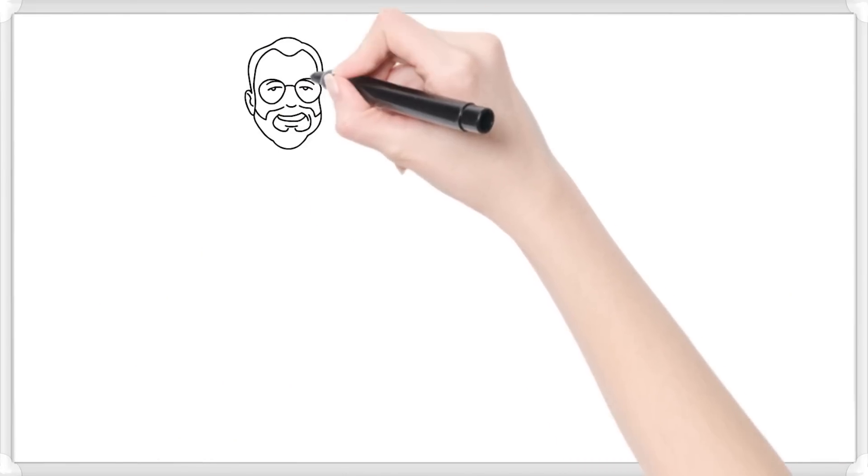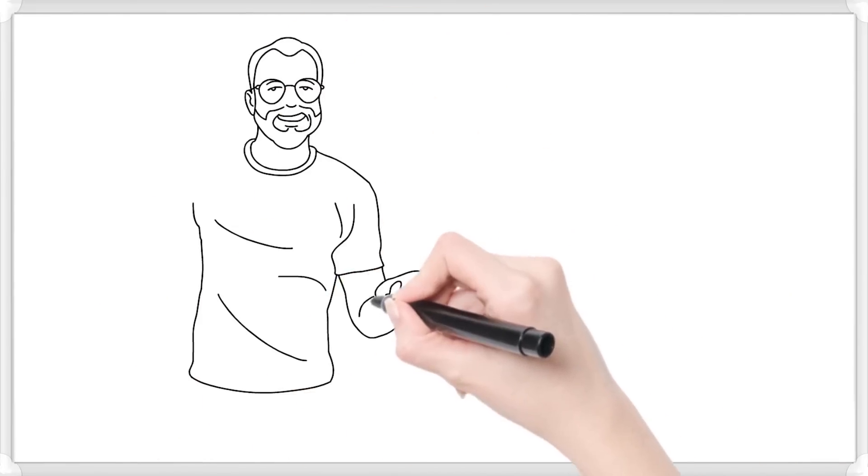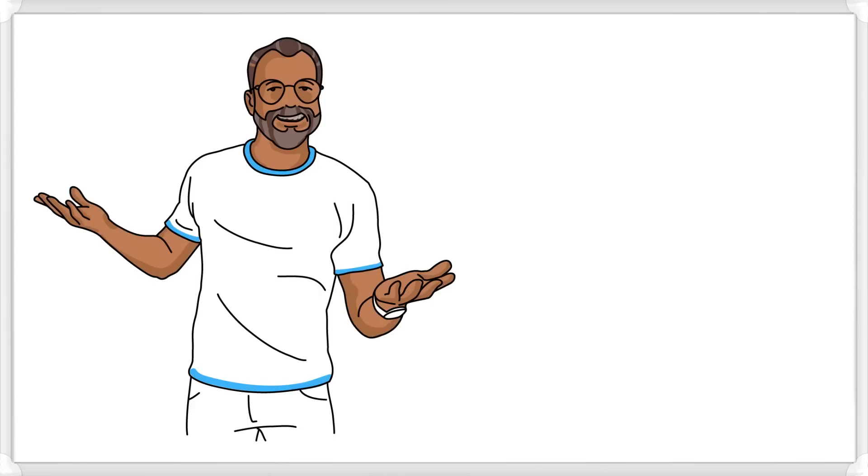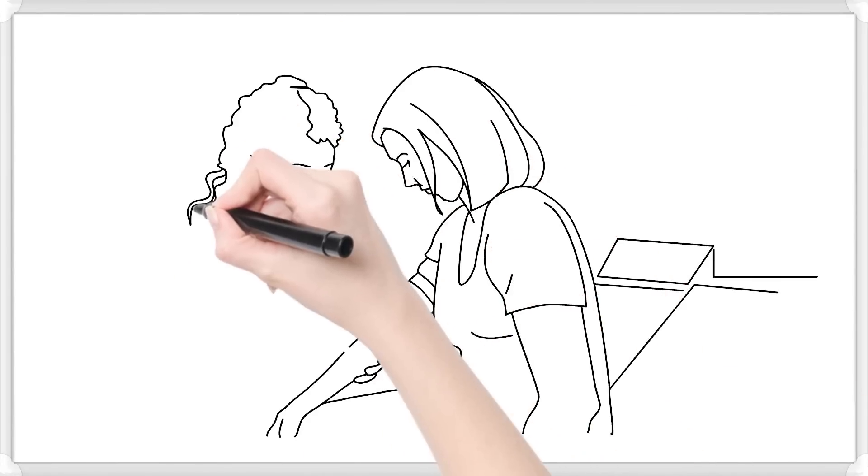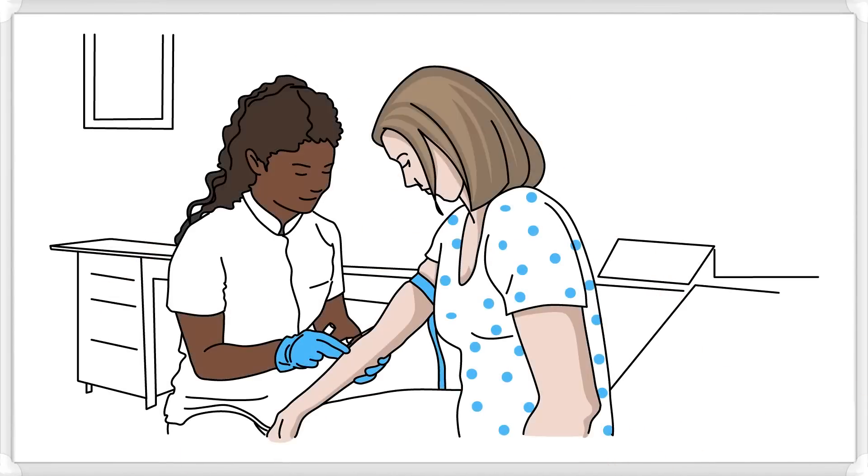Remember, many people with AATD live a healthy life with appropriate treatment and lifestyle changes, such as eating well, exercising, avoiding smoking, and staying up to date with vaccinations. But the first step is to be screened for AATD if you are experiencing symptoms.